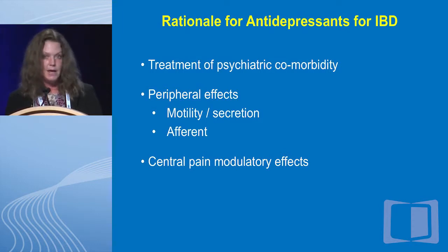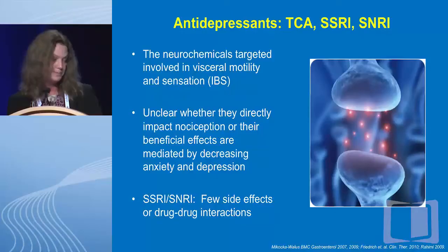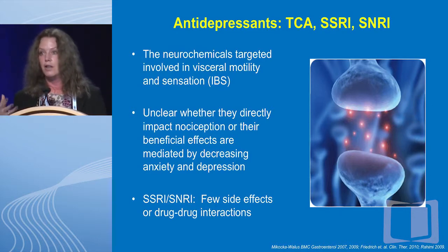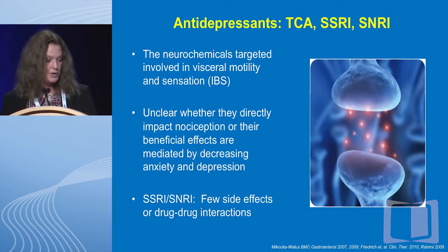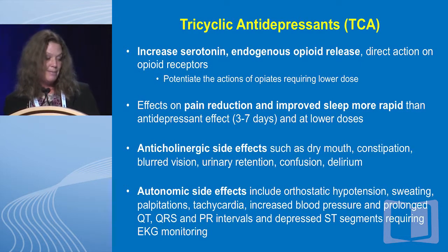When we use antidepressants for IBD, first and foremost we're thinking about anxiety and depression — the indication most of them are labeled for in both pediatric and adult populations. But they do have direct GI effects in terms of affecting motility, afferent signaling, and central pain modulatory effects. Tricyclics, serotonergic agents, and mixed serotonergic-noradrenergic agents are most frequently used. SSRIs and SNRIs are well tolerated with relatively little drug-drug interactions and few side effects. Tricyclics have been the most tried and true; they increase serotonin to a small degree, directly impact endogenous opiate release, and can improve sleep in addition to pain — however they have many side effects.